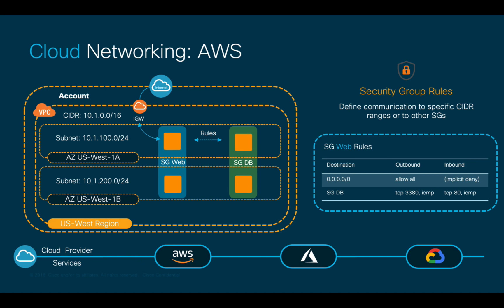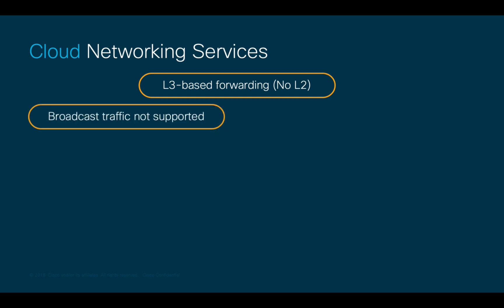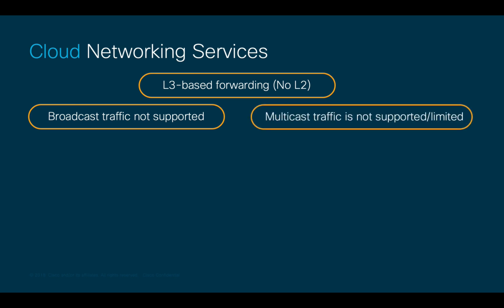It is important to mention that cloud networking services are entirely based on Layer 3, meaning that there is no Layer 2 forwarding configurations such as VLANs, broadcast traffic is not supported, and multicast is either not supported or limited, depending on the cloud provider you use.